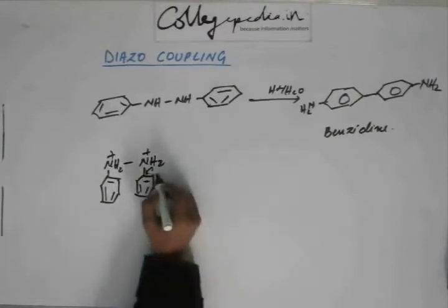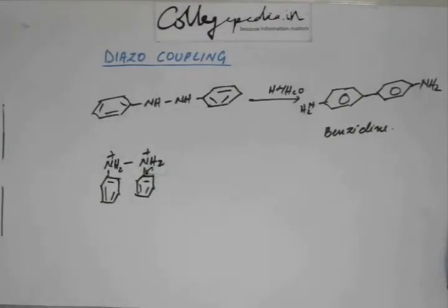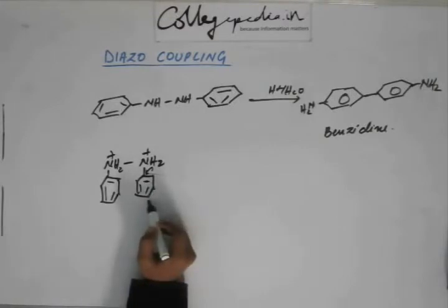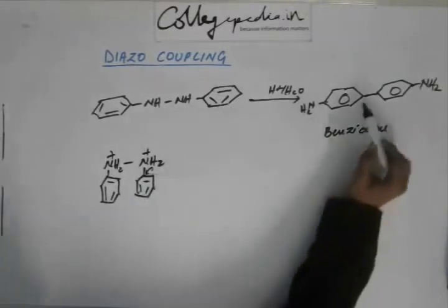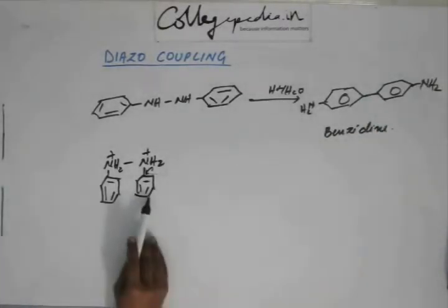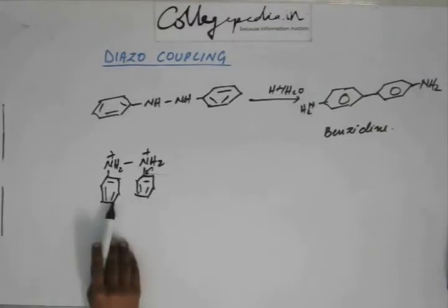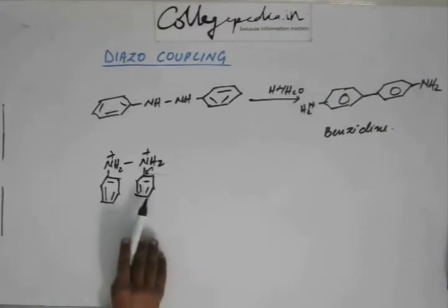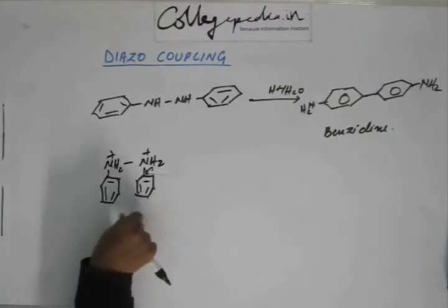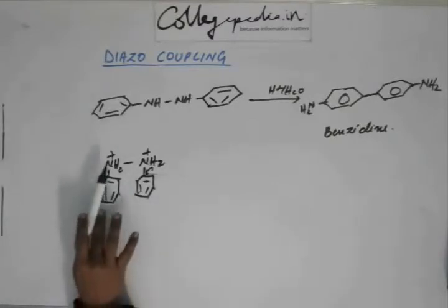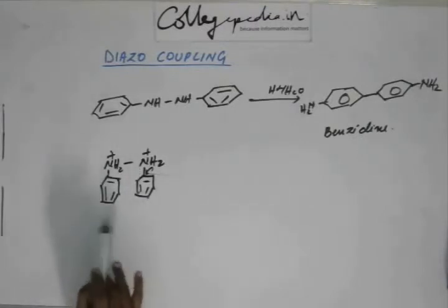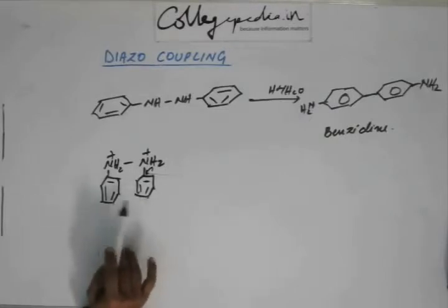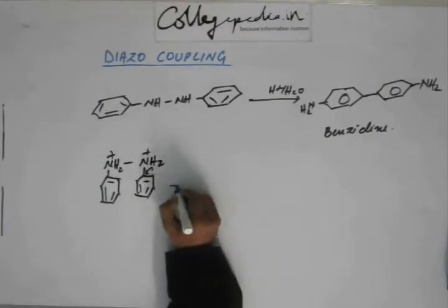Now there is going to be a plus charge appearing on this carbon, and that plus charge appears here. As you can see, there is bonding between this carbon and this carbon. So if there is a plus charge appearing here, bring a negative charge on this carbon — this C minus and this C plus will form a bond with each other. There will be a double bond formation between this nitrogen and this carbon. Shift the pi bonds accordingly and get a bond between this carbon and this carbon.